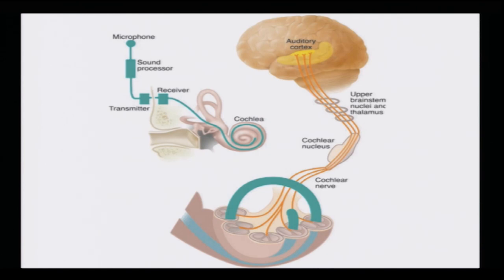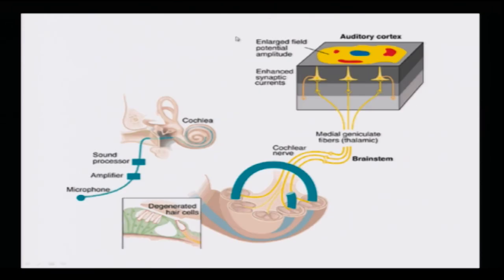This is the overall summary of the cochlear implant. Another cartoon shows the same: microphone, amplifier, sound processor — sound signals are converted into electrical signals and then through the cochlea to the cochlear nerves, to the medial geniculate/thalamic fibers, from the brain stem to enlarged field potential amplitude in the auditory cortex and enhanced synaptic currents. This is the situation when hair cells — those wonderful mechanosensing cells — are degenerated and you have no option but to resort to neural engineering techniques. This is one of the big success stories of mankind's last 100–150 years of quest to interface machine with body parts.